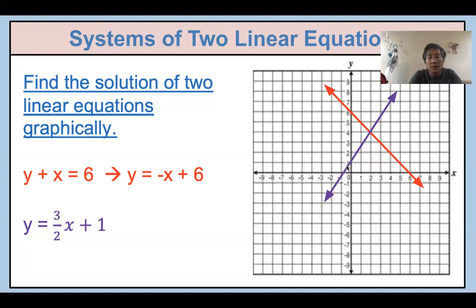Now, where do you see the intersection between these two lines? The intersection point is the solution. The coordinate here is x = 2, y = 4. So the solution is (2, 4). Does everybody understand how to solve this problem?